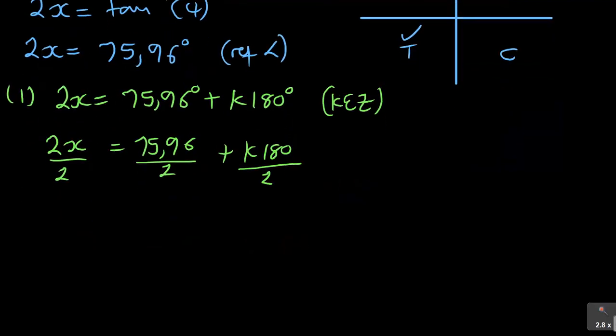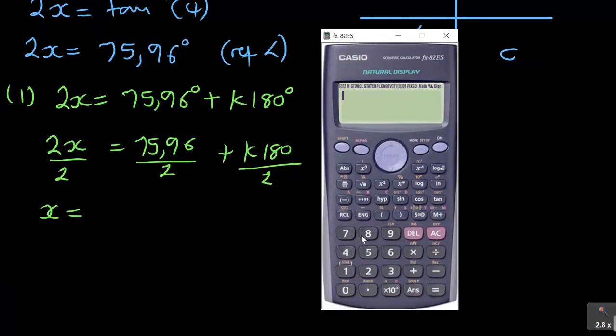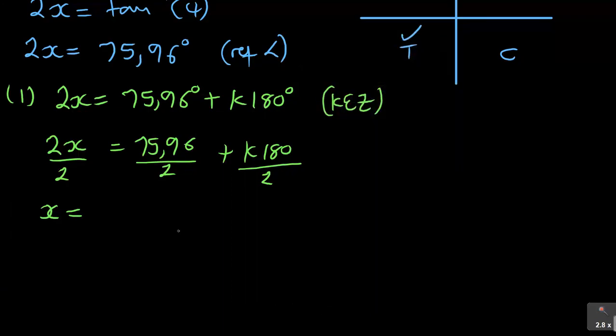Are you seeing that? Then you have x is equal to, then when you start to divide, you will be having, it's 75.96 divided by 2. It is 37.96. So you've got 37.96 plus K 90. So this is the first one. It's quadrant number 1.